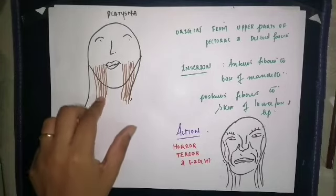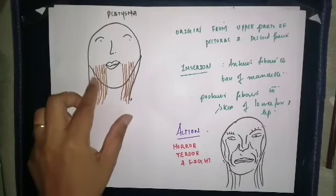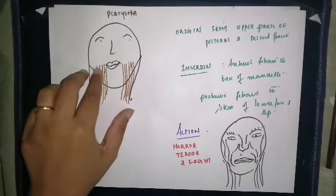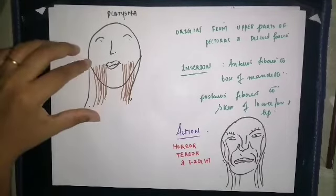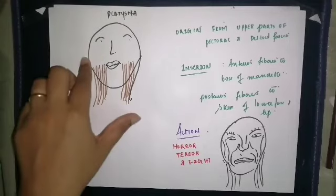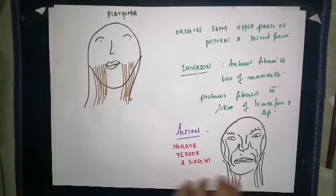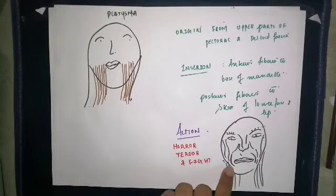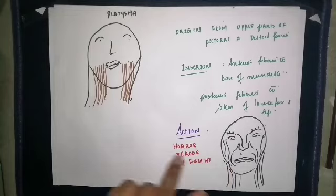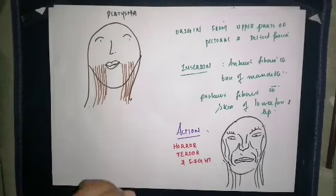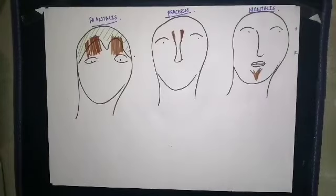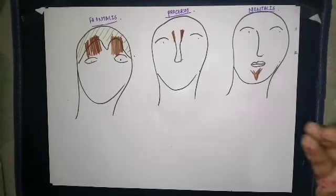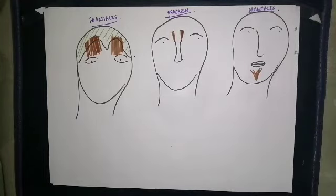The platysma is an important superficial muscle in the neck. It originates from the upper parts of the pectoral and deltoid fascia, runs upward and medially, with anterior fibers inserting into the base of the mandible and posterior fibers into the skin of the lower face and lip. It is continuous with risorius, and when it contracts it makes an expression of horror, terror, and fright.